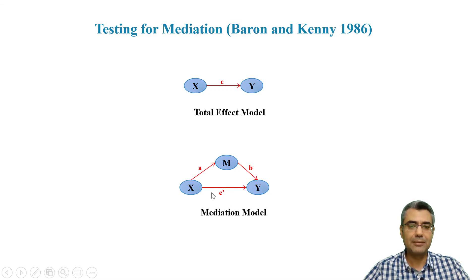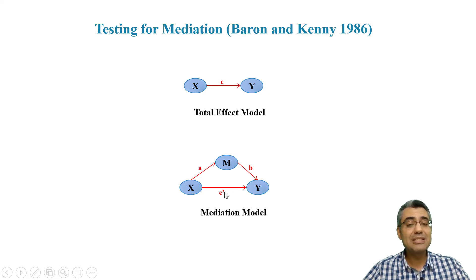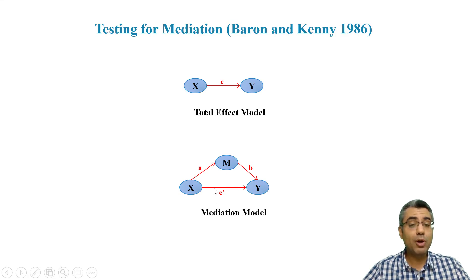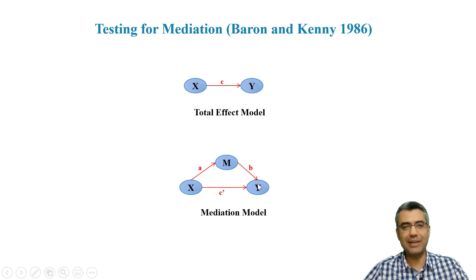If c prime is not significant anymore, it means M is absorbing a significant amount — essentially all — of the relationship. In that case we say we have full mediation, meaning M fully absorbed the effect of X on Y. This is the difference between partial and full mediation, and this is Baron and Kenny.